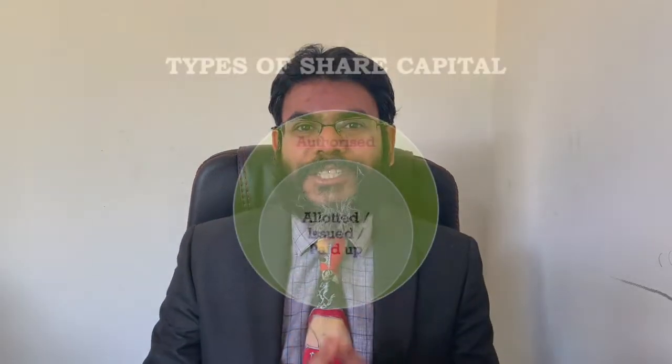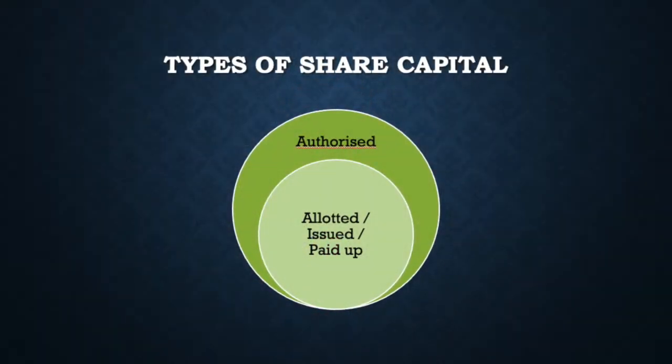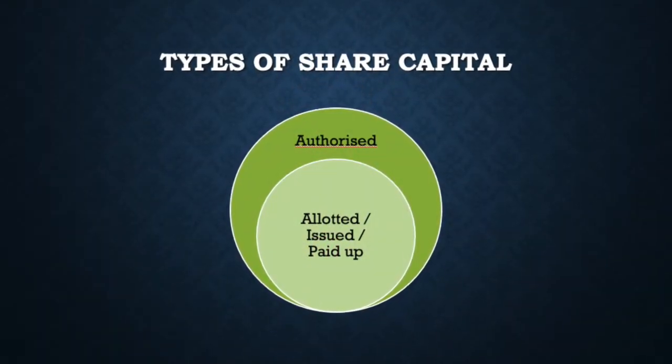The authorized share capital is mentioned in the memorandum of association, which means it can be amended — simply by amending the memorandum of association. From your basic knowledge of company law, you'll know that this requires a special resolution of the shareholders. So by a special resolution of the shareholders, you should be able to amend or increase the authorized share capital. To sum up, the authorized share capital is the maximum amount of money that the company can possibly raise.